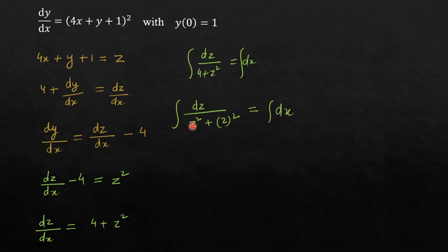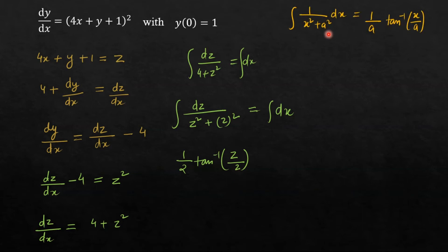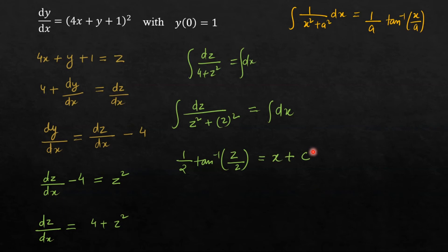Now I can write this expression as dz by (z square plus 2 square) is equal to integral of dx. The integration of 1 by (z square plus 2 square) will be 1 by 2 tan inverse z by 2. We know that integration of 1 by (x square plus a square) is equal to 1 by a tan inverse x by a. Here the value of a is 2, so we get 1 by 2 tan inverse z by 2. And the integration of dx will be x plus c, where c is the integration constant.